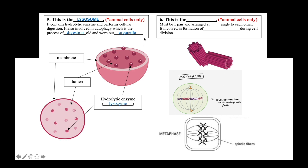The next organelle is the centrioles. There must be a pair of centrioles arranged at a 90-degree angle to each other. Centrioles are involved in the formation of spindle fibres during cell division. It is also important to note that centrioles can only be found in animal cells, so when drawing cell division in chapter 3, do not draw centrioles when drawing a plant cell.